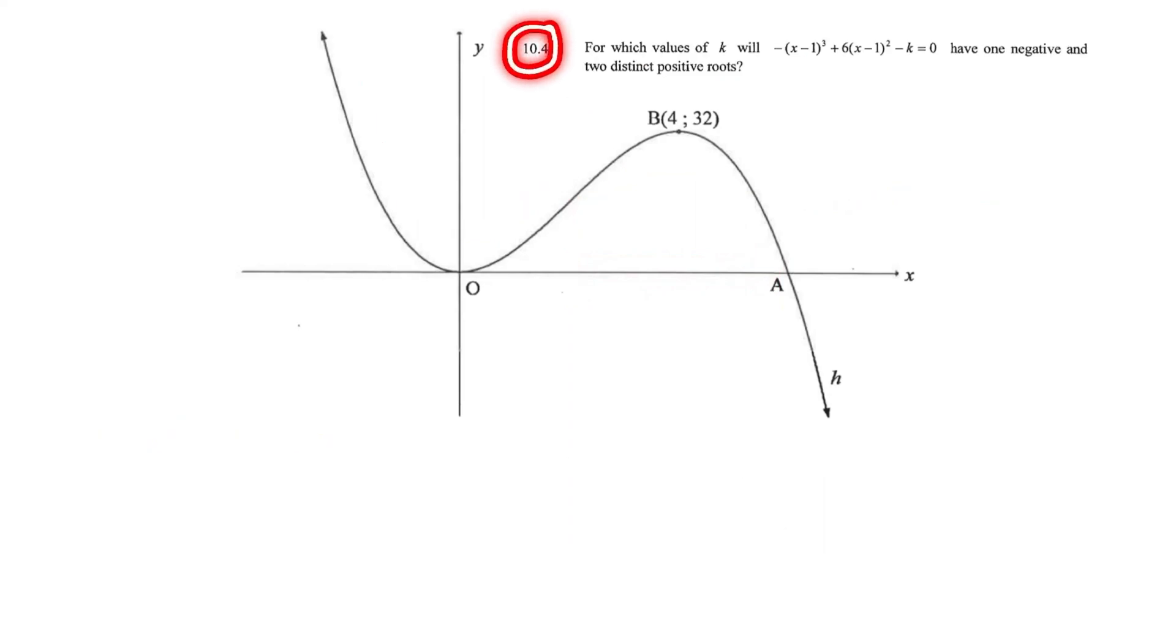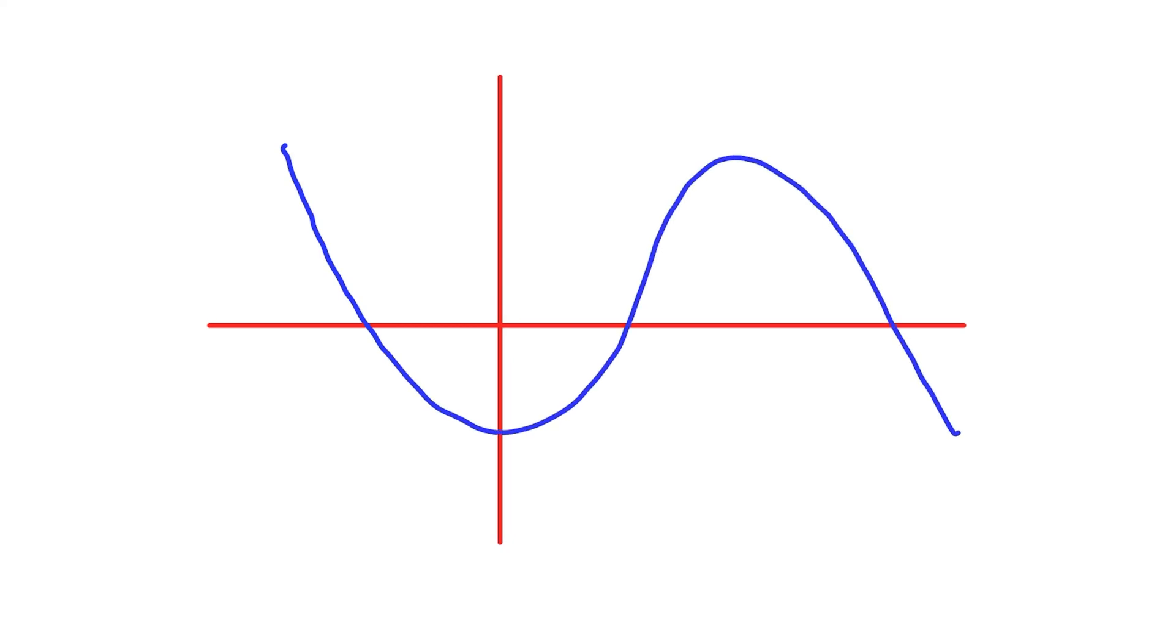10.4. For which values of k will this function have one negative and two distinct positive roots? So let's first try to understand the question. And I'll show you what they mean by one negative and two distinct positive roots.